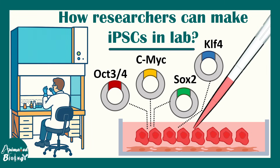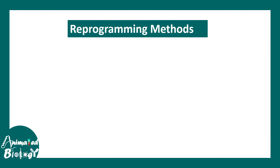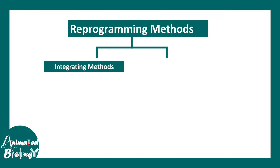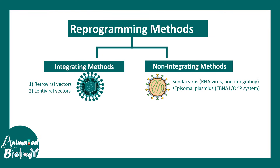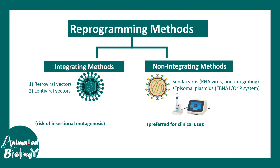Now let us understand how researchers make iPSCs in the lab. Converting any cell into a stem cell requires reprogramming, which can be done by integrative or non-integrative methods. In integrative methods, which were the older approach, retroviral or lentiviral vectors were used to deliver transcription factors into cells. In non-integrative methods, Sendai virus or episomal plasmids are used. The problem with integrative methods is the risk of insertional mutagenesis, whereas non-integrative methods are preferred in clinical settings because the chances of incorporating a mutation are lower.